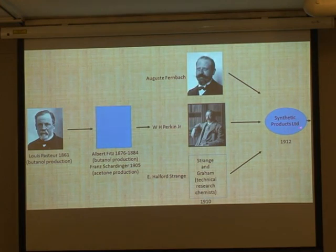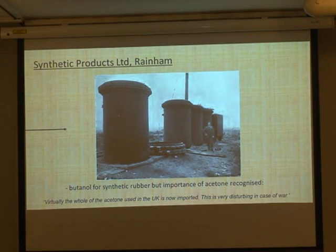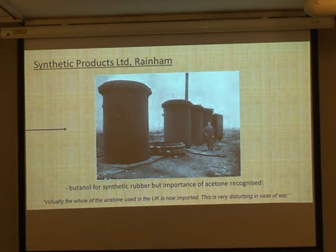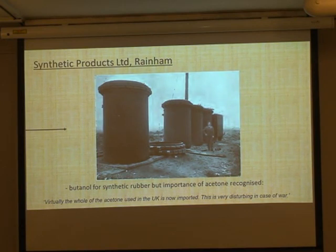In 1912 they formed a company, Synthetic Products Limited, and they built a factory at Rainham specifically to produce butanol for synthetic rubber. These are the fermenters they were going to use, under construction. For some reason this factory didn't stay in operation very long, because they acquired a disused oil tank on Victoria Dock in King's Lynn and moved all the production up there.